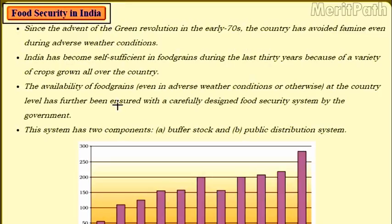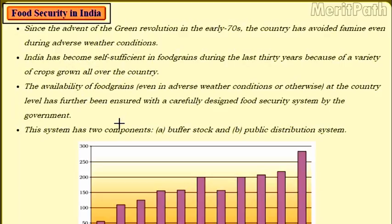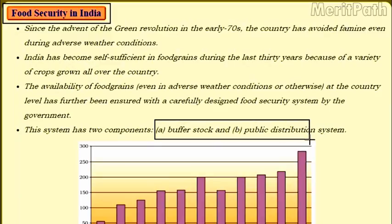Since the advent of the Green Revolution in the early 1970s, the country has avoided famine even during adverse weather conditions. India has become self-sufficient in food grains during the last 30 years because of a variety of crops grown all over the country. The availability of food grains has been further ensured with a carefully designed food security system by the government, comprising two components: a buffer stock and a public distribution system.